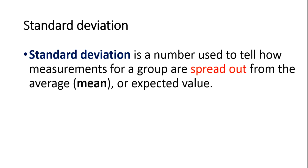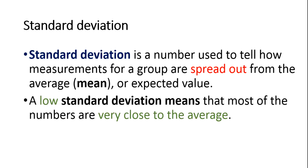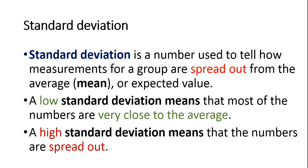Let's see what is standard deviation. Standard deviation is a number used to tell how the measurements of a group are spread out from the average or mean or the expected value. A low standard deviation means that the numbers are very close to the average, whereas a high standard deviation means that the numbers are spread out.